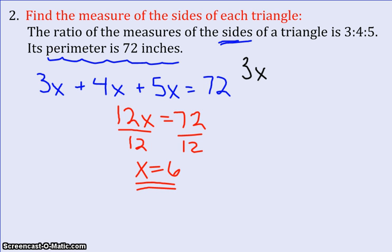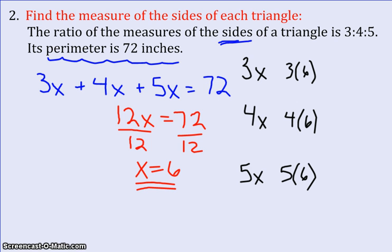My ratios were 3x, 4x, and 5x. So I'll have 3 times 6, 4 times 6, and 5 times 6. All I did was replace the x with 6 because we found it to be 6 earlier.